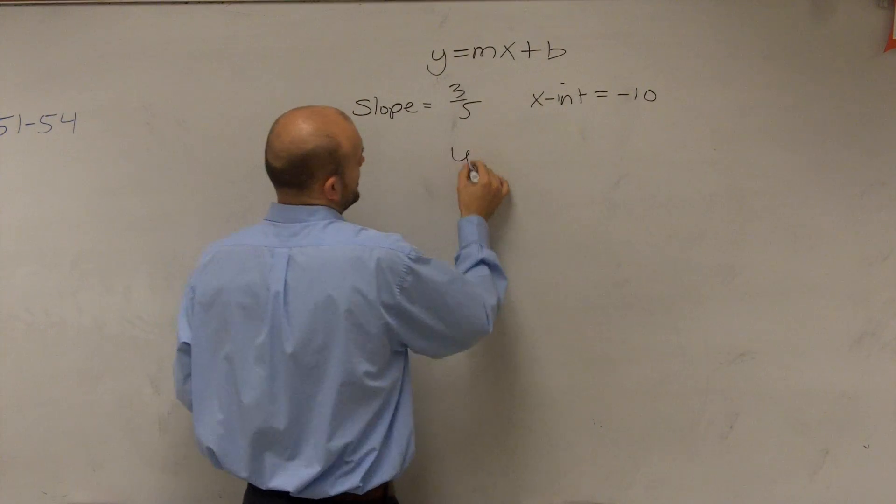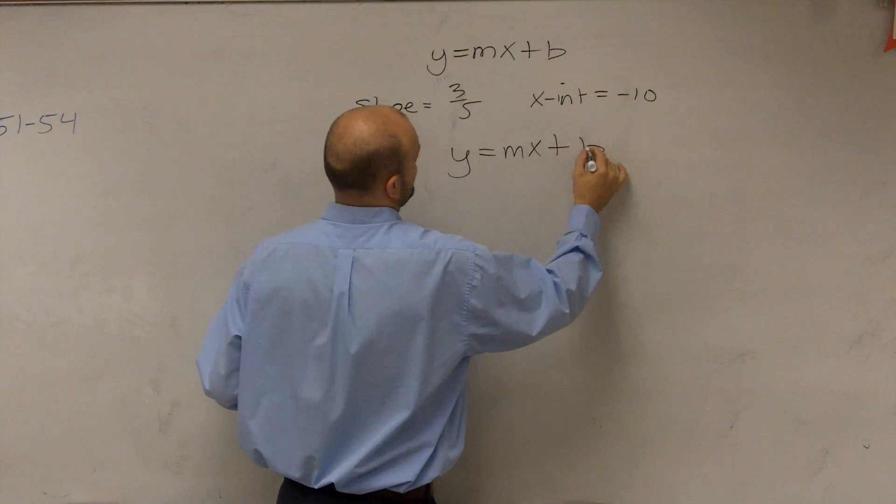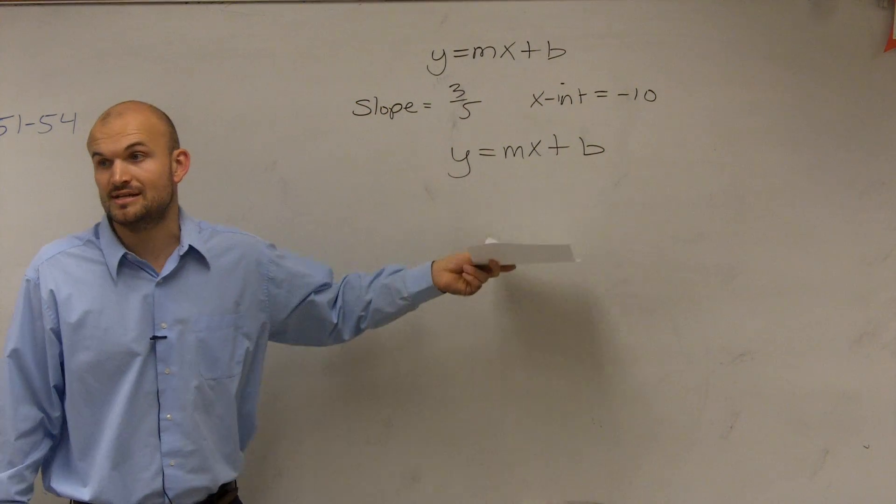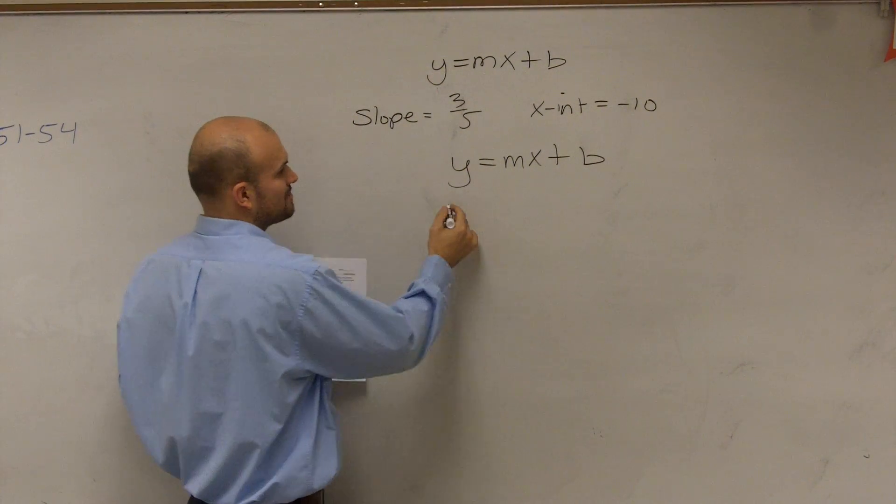So again, what we want to do, Isabelina, is writing y equals mx plus b. Do we know what b is now? No. Because we're talking about x-intercepts, not y-intercepts. But we do know the slope. So let's plug that in.